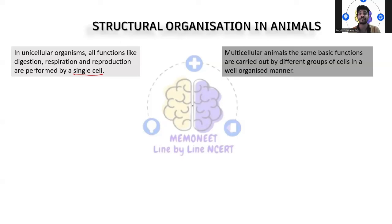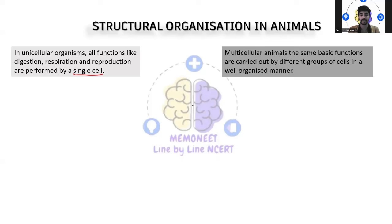One single cell will not be responsible for digestion, reproduction, respiration, excretion, and circulation — all together. What happens is the cells group together to form an organ and organ system. There is coordination between each and every cell and every organ in a well-designed manner. That can be seen in multicellular animals.